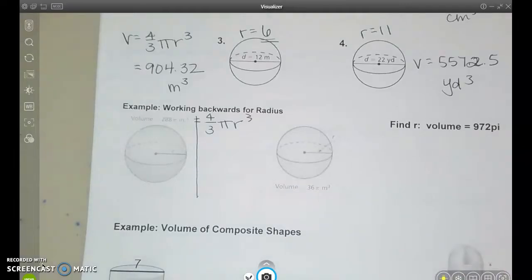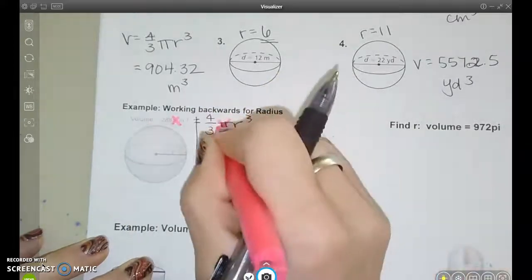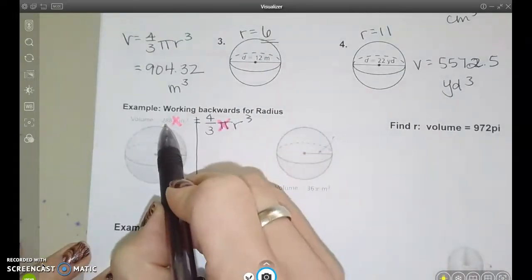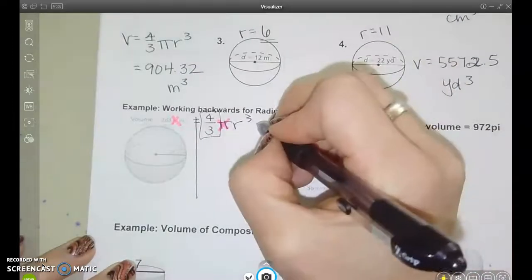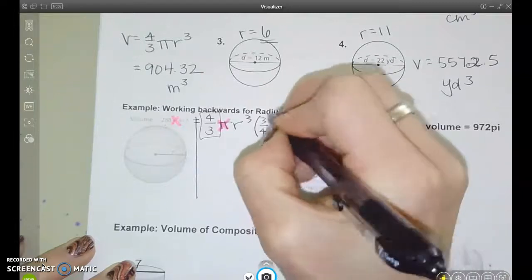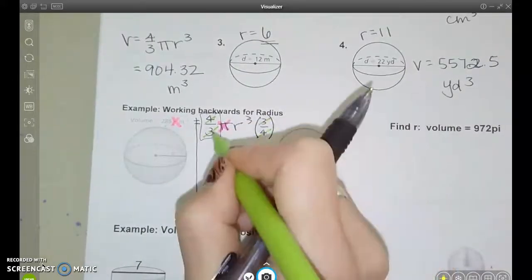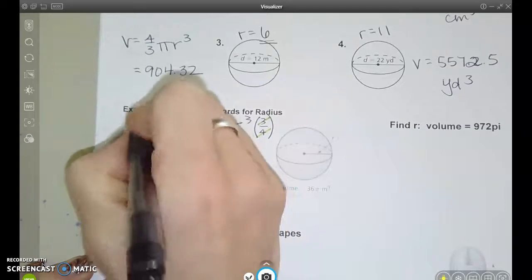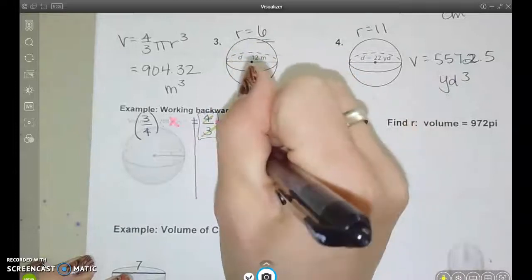So the first thing we can do, if you notice, they tell us the volume is 288 pi. That was helpful because the pi over there cancels with the pi over here. They do that for a reason to save you a step. Now I see that I have 288 equals four-thirds r cubed. I want to get rid of this four-thirds. We talked way back at the beginning of the school year how we can cancel out a fraction if we multiply by the reciprocal. So if I cancel out this four-thirds, I can do the same thing over here. Whatever I do to one side, I have to do to the other side. And now everything except for the r cubed is canceled out.